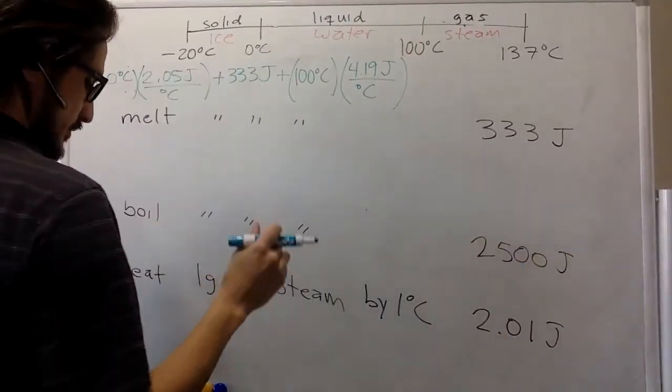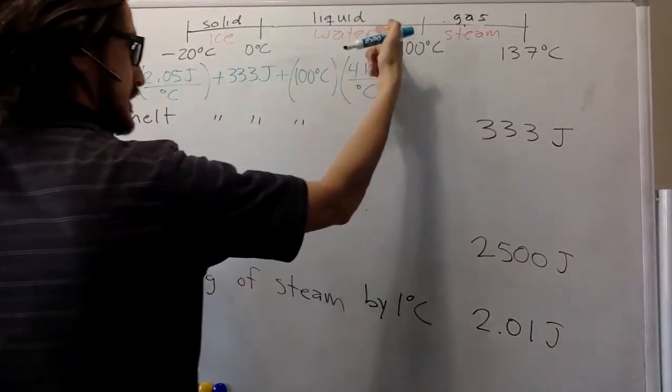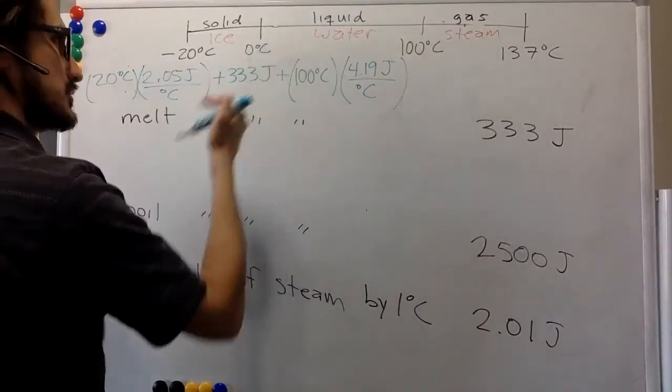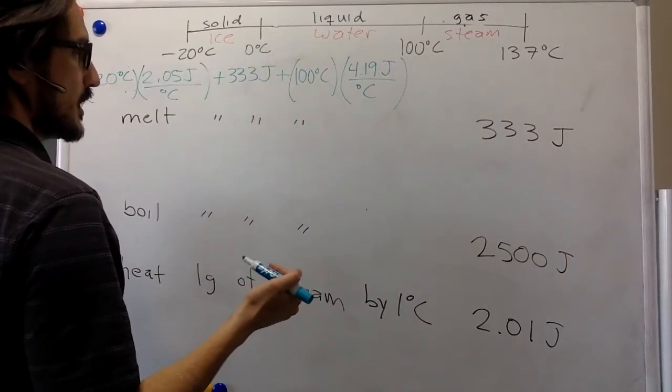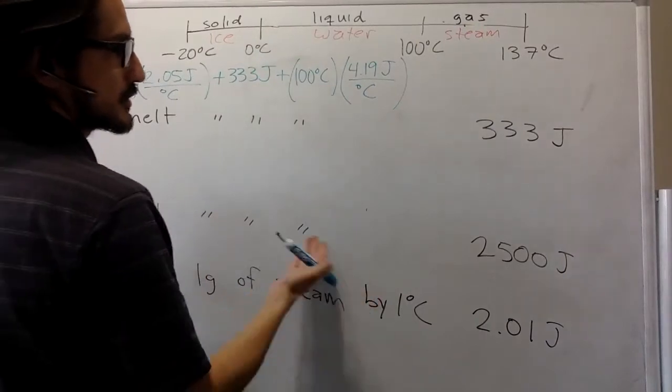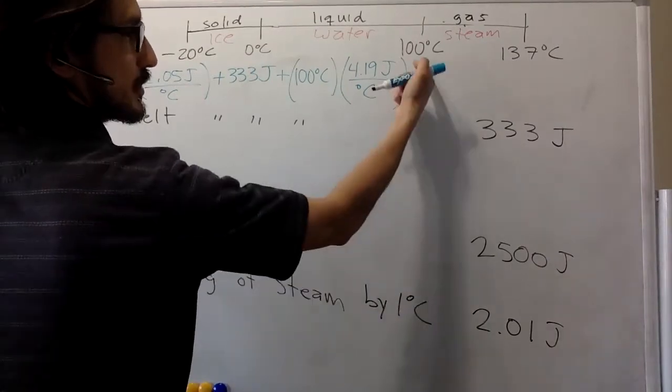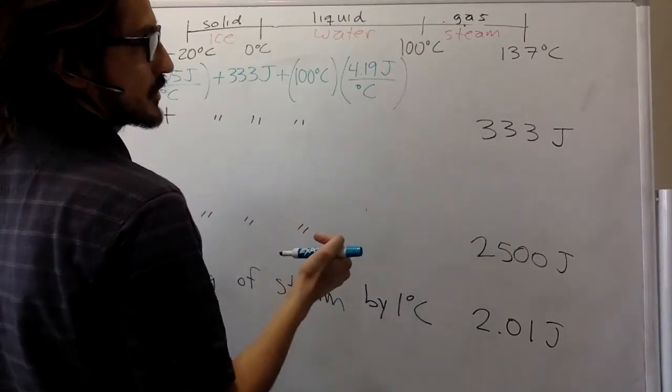And then you have the same phenomenon going from liquid to gas as you had going from solid to liquid. You have a latent heat. So you can continue adding heat and it will stay at 100 Celsius.